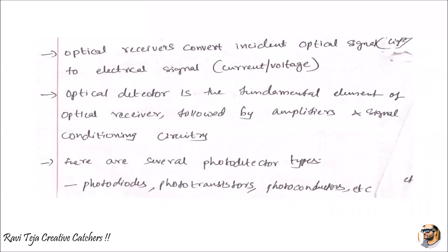Optical receivers convert the incident optical signal to an electrical signal, which is current or voltage. These optical detectors or light detectors are a fundamental element incorporated with the optical receiver, followed by amplifiers and signal conditioning circuitry.